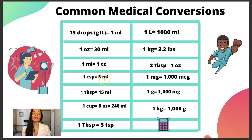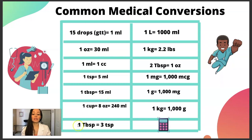One teaspoon equals five milliliters. So if a calculation asks how many teaspoons are in five mLs, or you're helping a patient administer dosage to their children, that's one teaspoon. One tablespoon is 15 milliliters, which means one tablespoon equals three teaspoons, because five plus five plus five is 15.